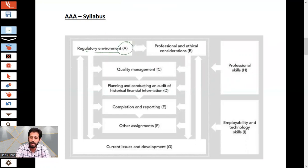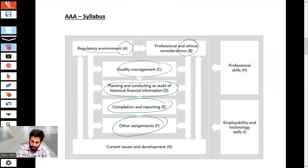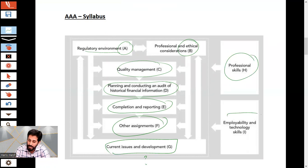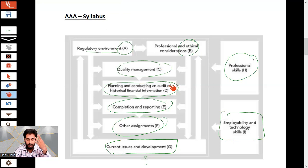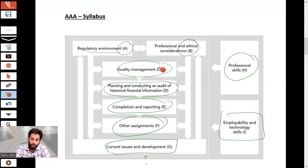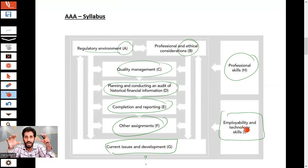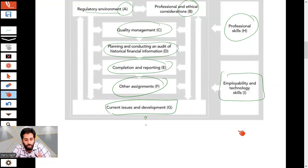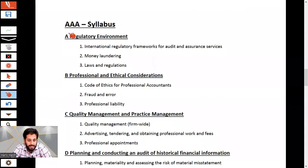The syllabus sections are: Section A — Regulatory environment; Section B — Professional ethics; Section C — Quality management; Section D — Planning and conducting the audit; Section E — Completion, review and reporting; along with other assignments, current issues, professional skills, and employability. These are nine major areas covered in the AAA syllabus, and we will go through each one in detail.